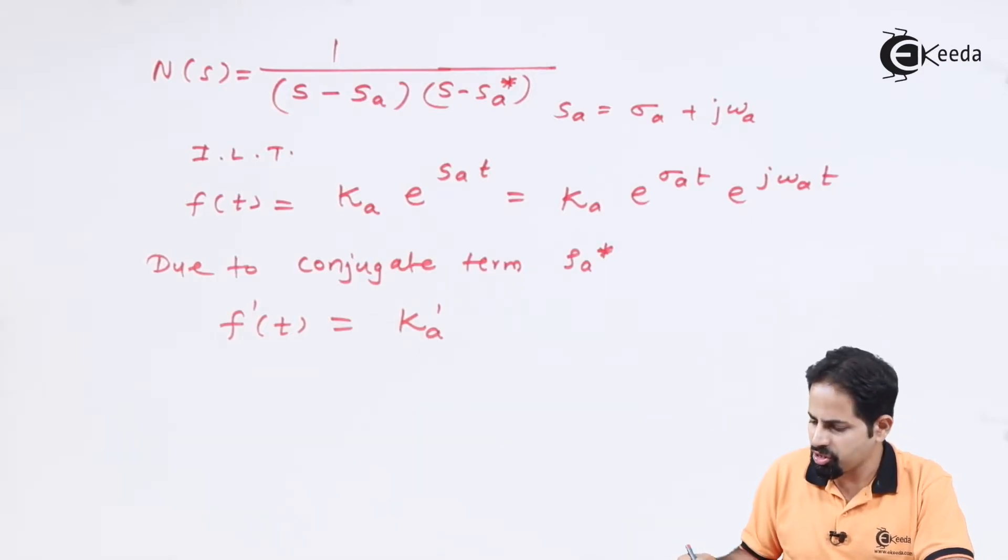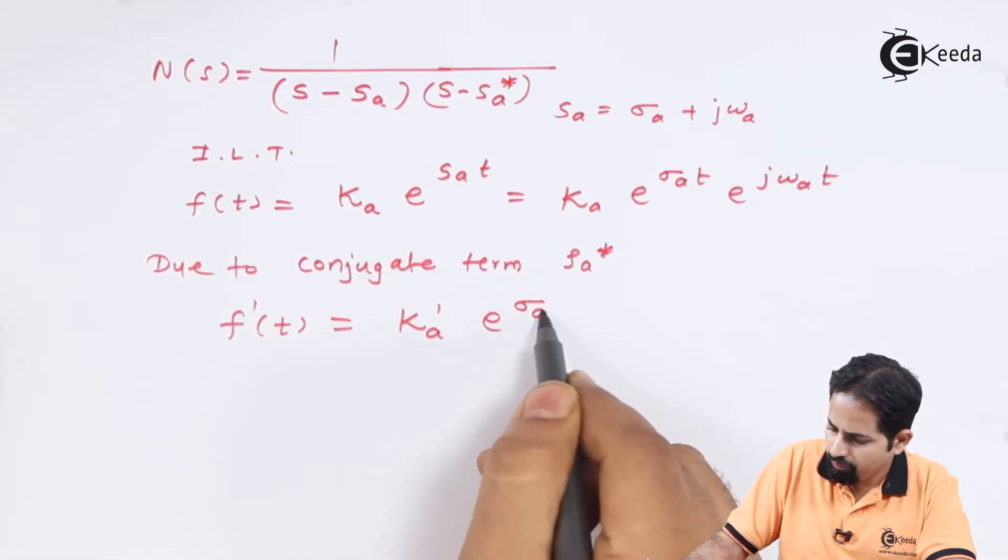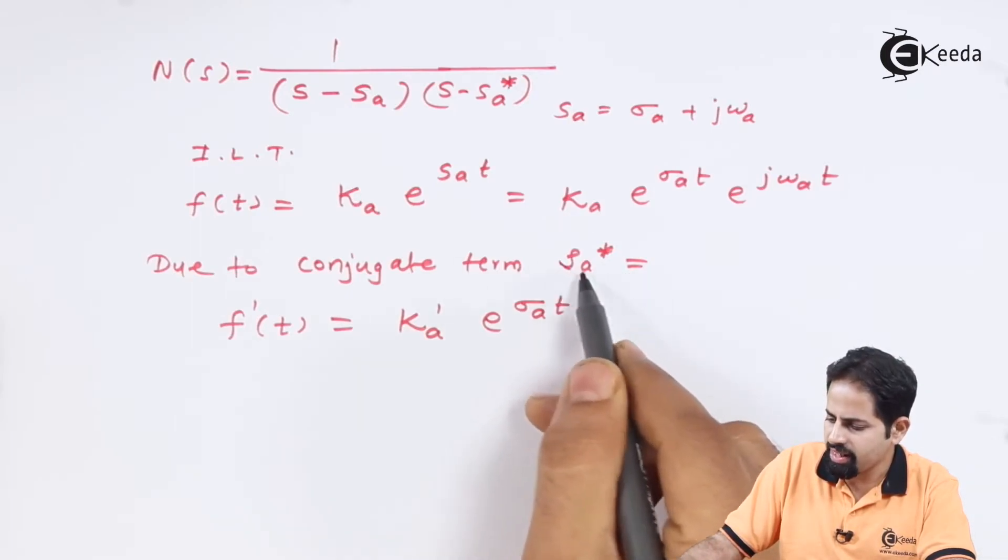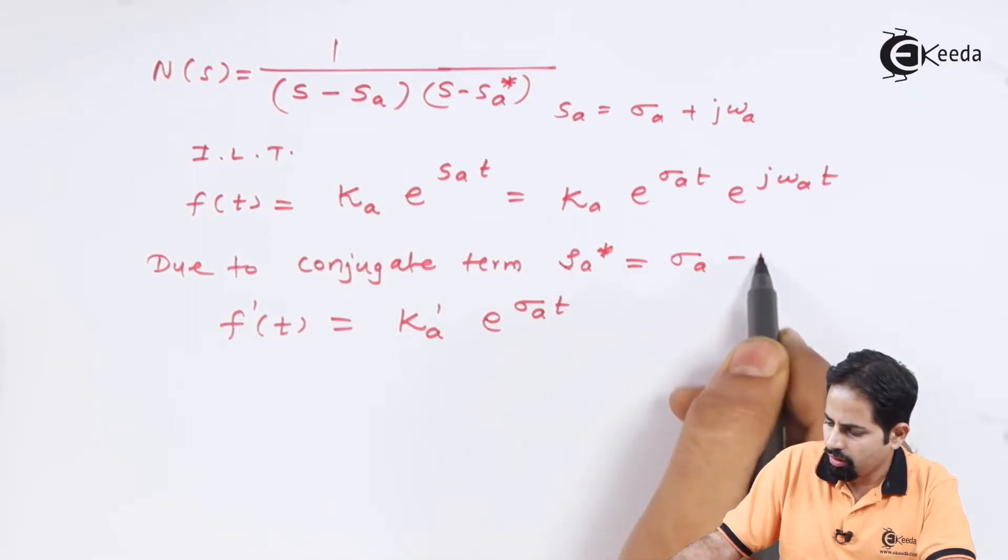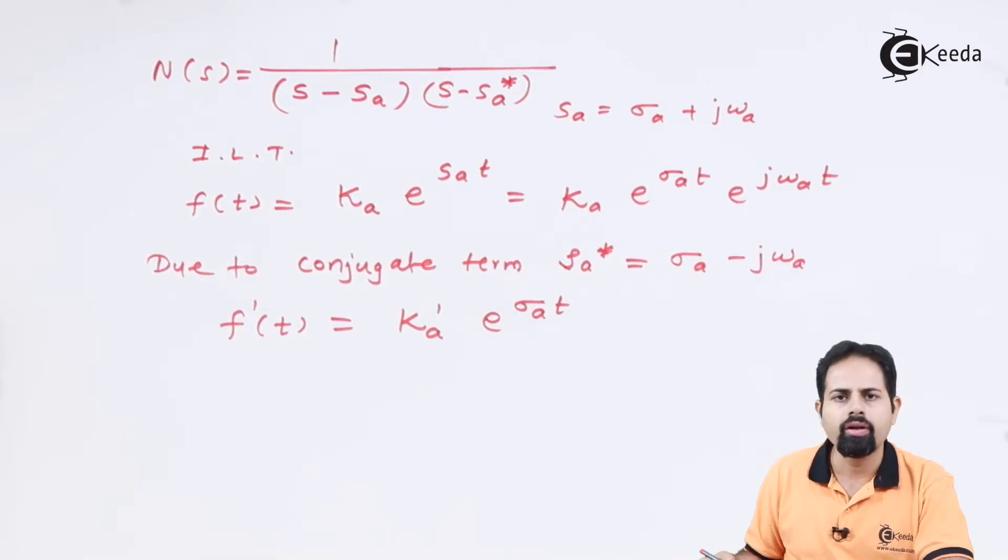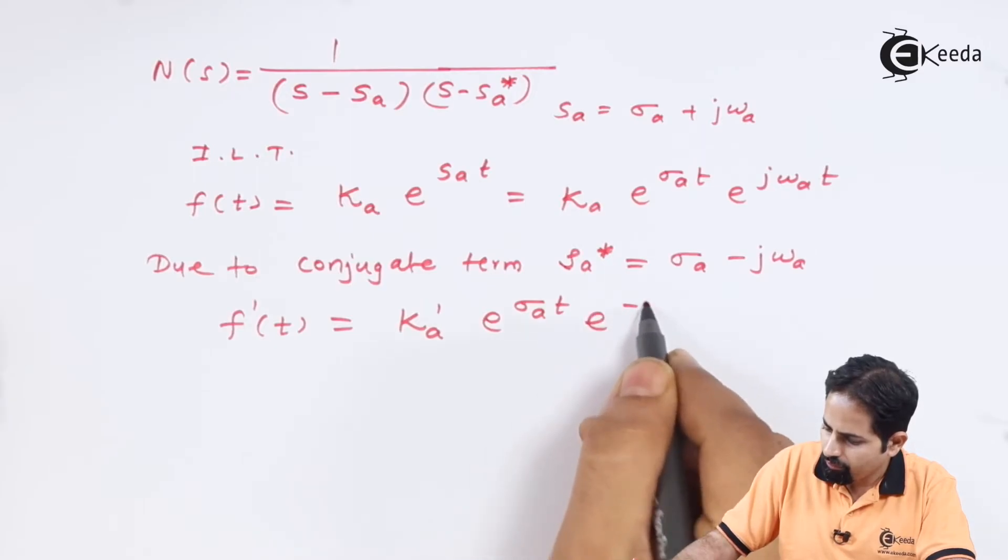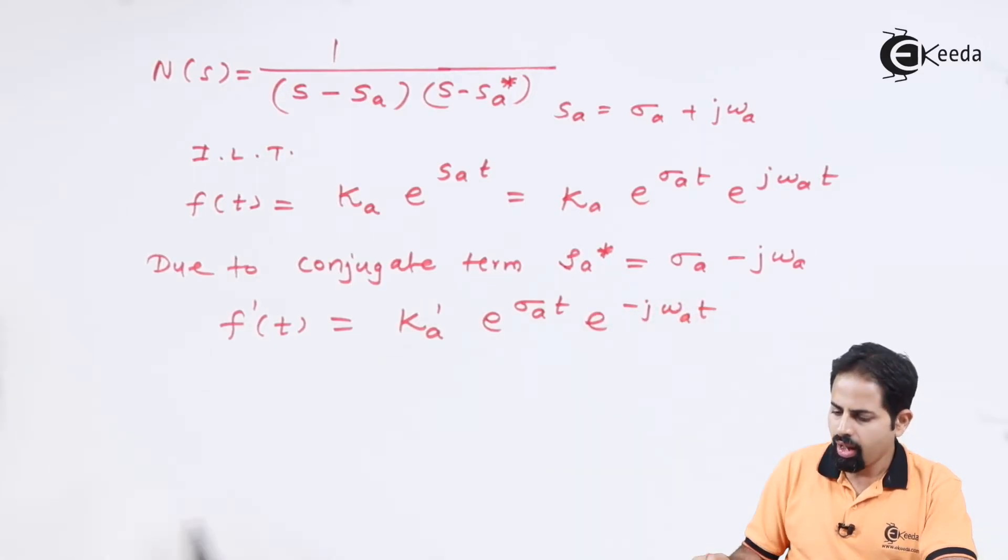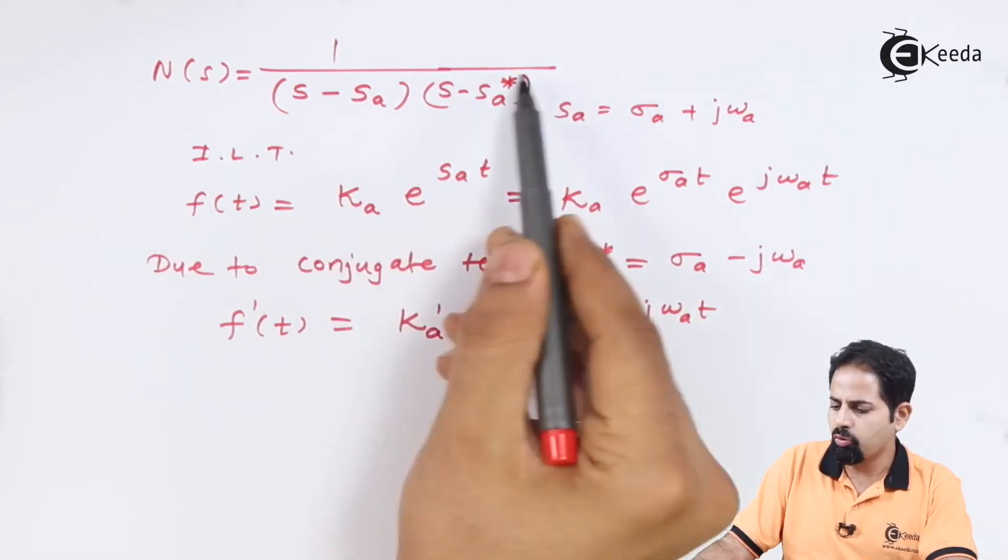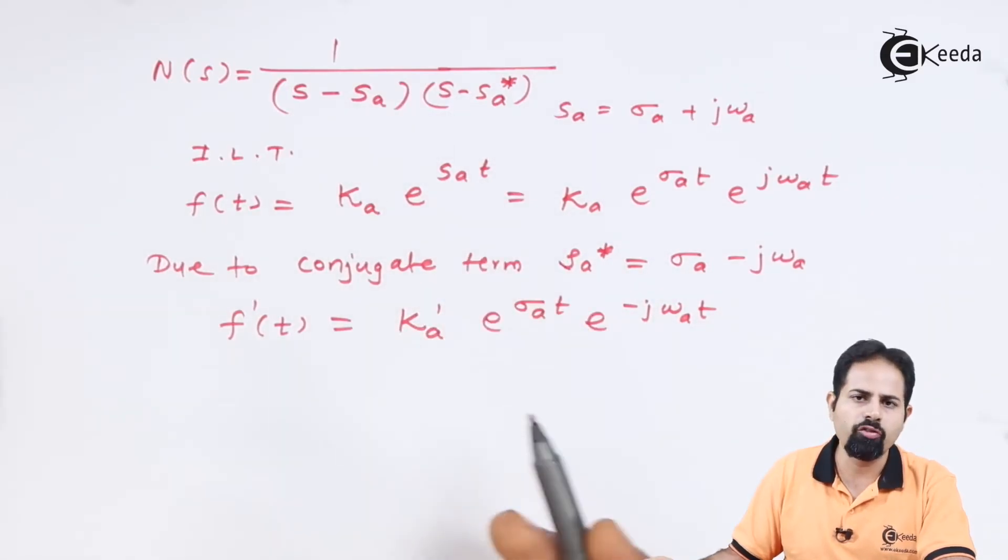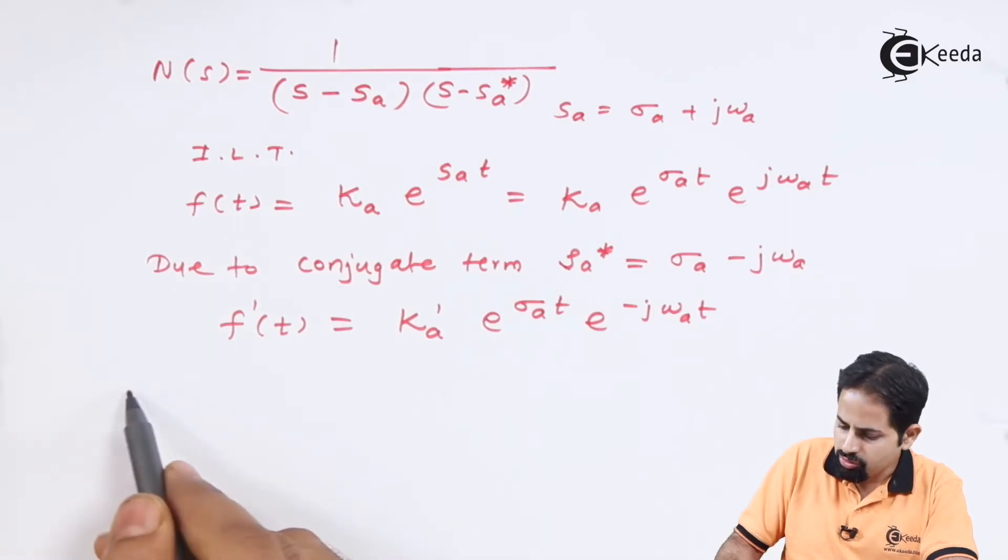We will have, we can say F dash of T, maybe KA dash. Now this SA conjugate, this is SA conjugate. Same except change of sign, because it is complex conjugate. And obviously, when you want to write this in time domain, you combine both. This is what we used to do in partial fractions.